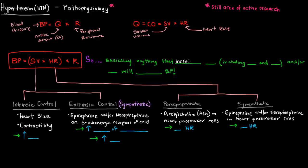Anything that increases cardiac output — which is made up of stroke volume and heart rate — and/or resistance will increase blood pressure. Stroke volume is controlled intrinsically and extrinsically. Intrinsically, if you have a bigger heart with longer muscle fibers that can contract more, you'll have a higher stroke volume.